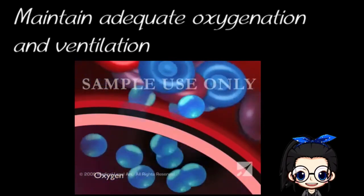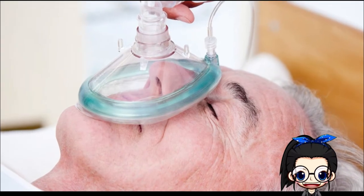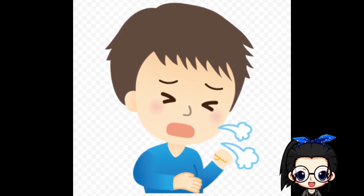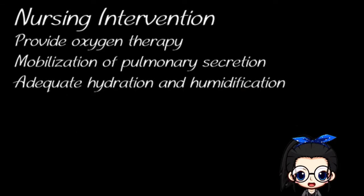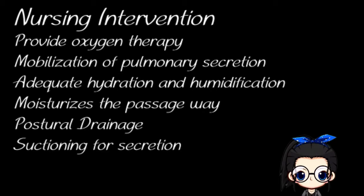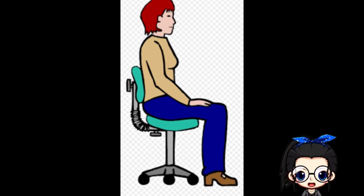The plan for this client is to maintain adequate oxygenation and ventilation. Tissue hypoxia from inadequate oxygenation will ultimately lead to death. The primary intervention is to provide oxygen therapy for any patient who has acute respiratory failure. Mobilization of pulmonary secretions will increase the ability for gas exchange — this includes encouraging the client to cough and deep breathe, adequate hydration and humidification to replace fluid loss and moisturize the passageway, postural drainage by clapping the hand and clapping the back, suctioning for any loose secretions, and breathing exercises such as the use of pursed lip breathing. Also, sitting up in an upright position may help the client find a more comfortable position that allows easier breathing.